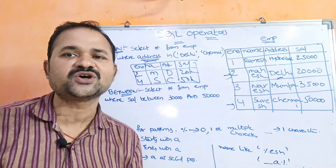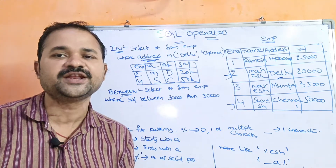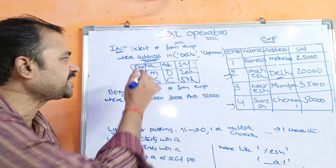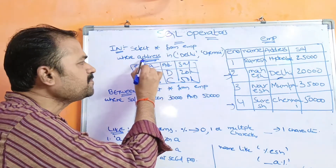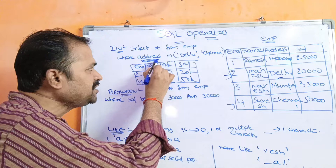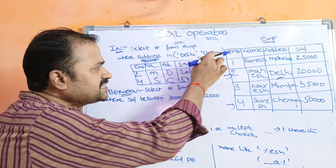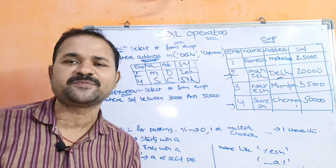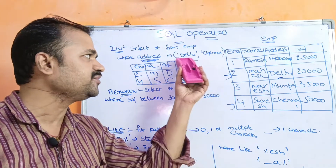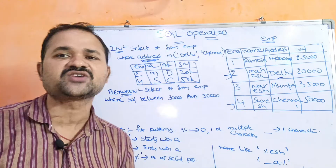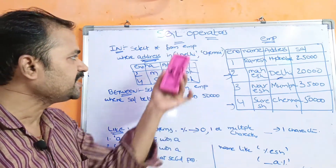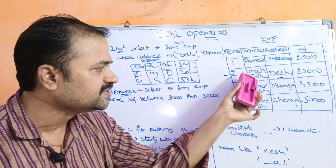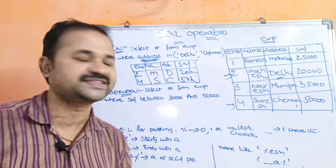This is the advantage of the IN operator. It is useful to check whether a column value is available in the list of values or not. The list of values are separated by comma, and each value is enclosed within quotations. So Delhi and Chennai are available, therefore the second record and fourth record get displayed.